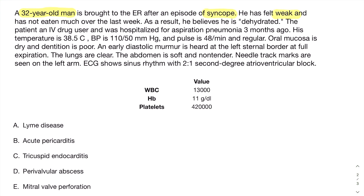He's felt weak and has not eaten much over the last week. The patient is an IV drug user — that seems like an important point, kind of pointing toward infective endocarditis — and was hospitalized for aspiration pneumonia three months ago. His temperature is 38.5, which again points toward infective endocarditis.